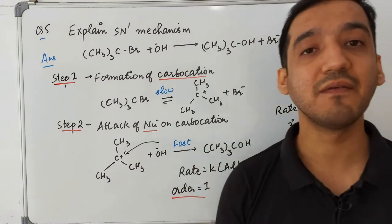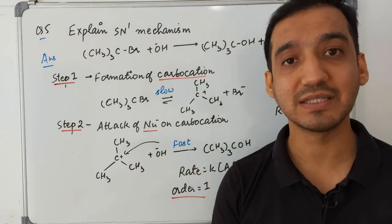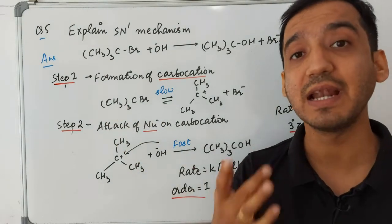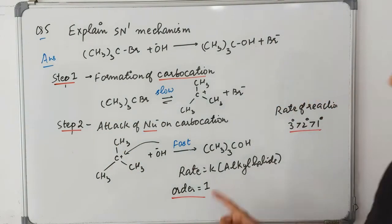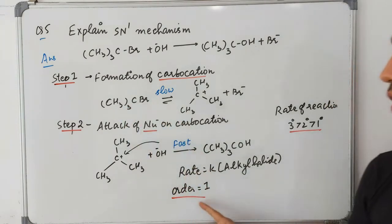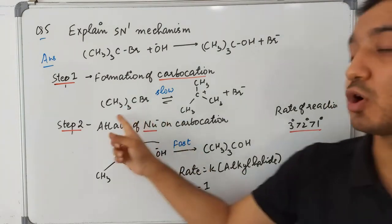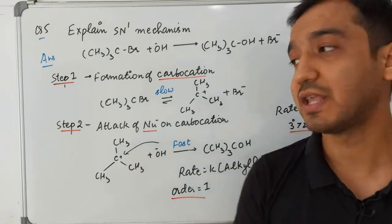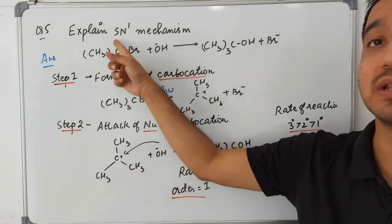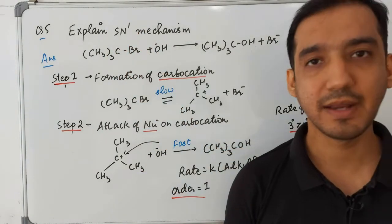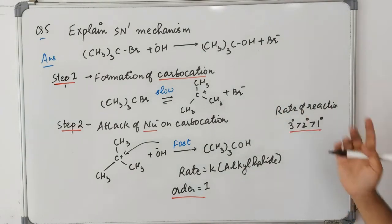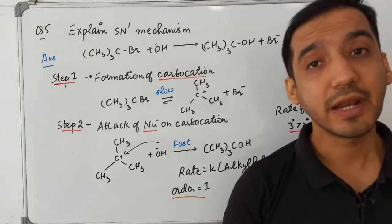The rate of the SN1 reaction depends only upon the concentration of the reactant in the slow step. So rate depends only upon the concentration of the alkyl halide. Since it depends on only one species, the order of the reaction is one — that is why we call it nucleophilic substitution unimolecular (SN1).